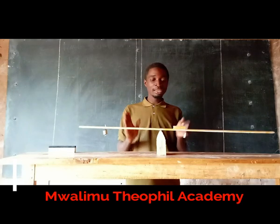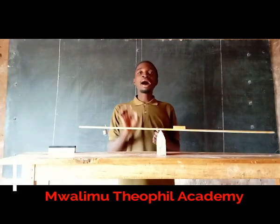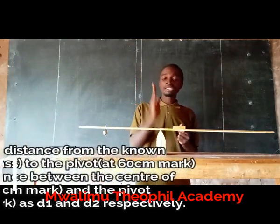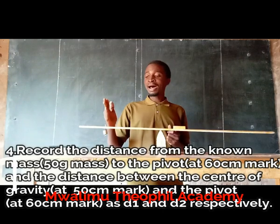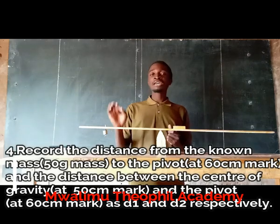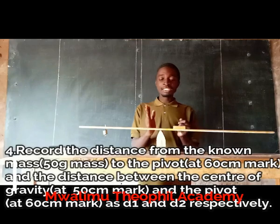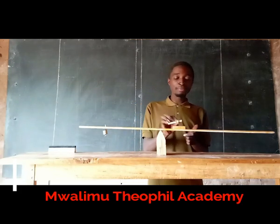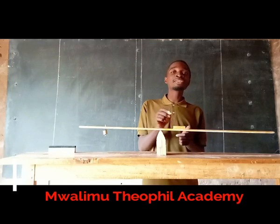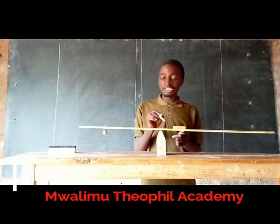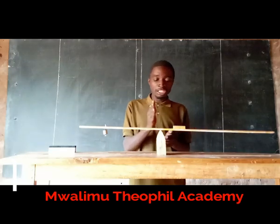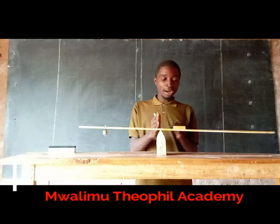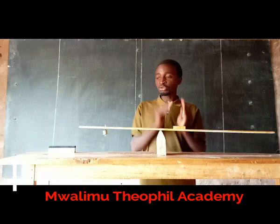Now let us go to the fourth step. What you should do here is record the distances. Record the distance from the 60 centimeter mark to the point where the 50 gram mass is hanging — this is D1. Also record the distance from the pivot, the turning point, to the 50 centimeter mark where the ruler originally balanced when there was no mass hung on it. Record this as D2.